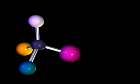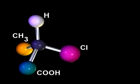This is a ball and stick model of a carbon molecule with four different groups attached to the central carbon. For example, the four groups could be hydrogen, chlorine, methyl, and carboxylic acid. This molecule is chiral.